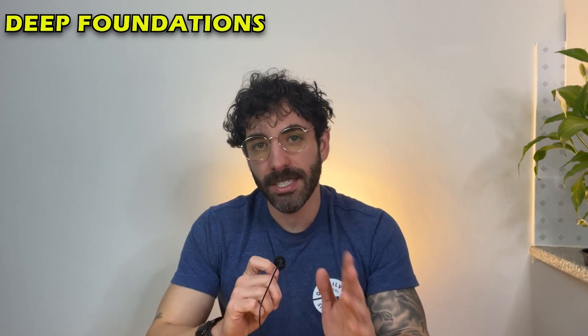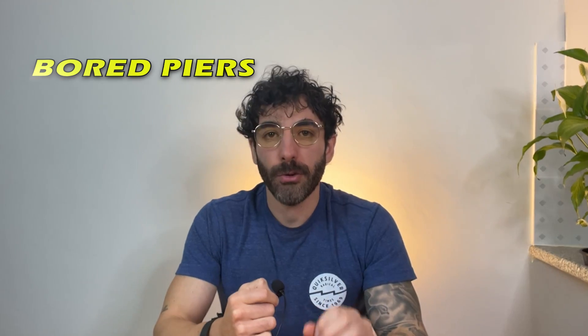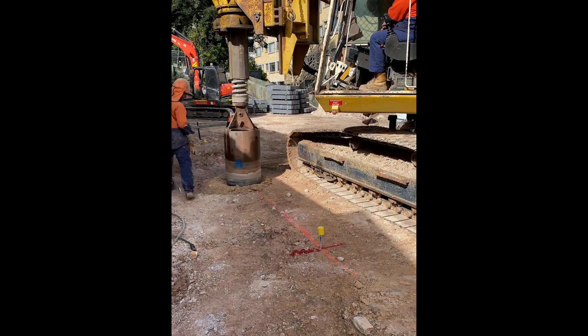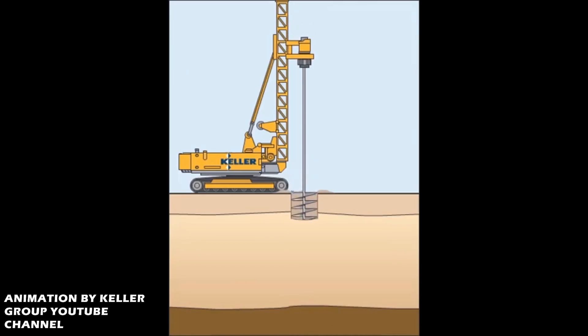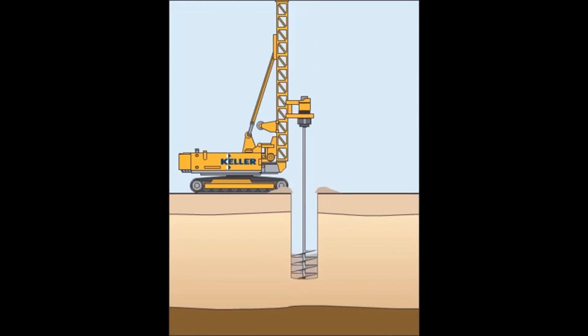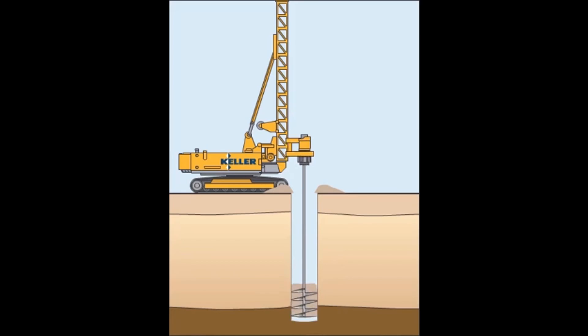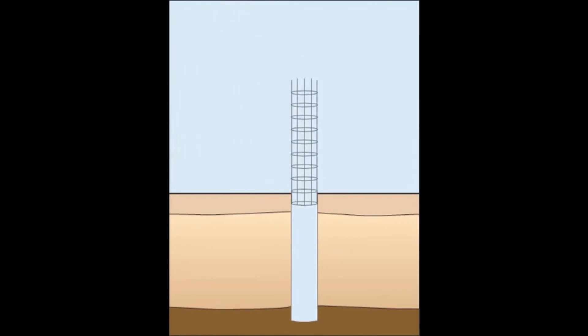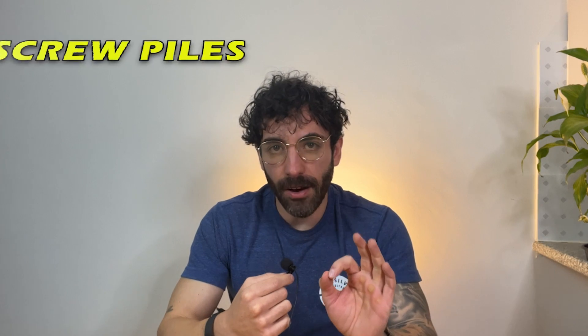Moving to deep foundation systems, our first type is the bored pier, which is created by drilling cylindrical holes into the ground with a drill rig. The drilling process involves gradually screwing the cutting blades into the soil, creating a bore hole. The excavated soil is removed and the process is repeated until the hole reaches the design depth. If required, a reinforcement cage is dropped into the borehole and filled with concrete. Bored piers are used in areas with difficult soil conditions or high structural loads, and can support columns for subfloor systems or be used in conjunction with raft or waffle slabs.